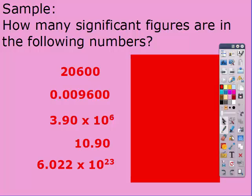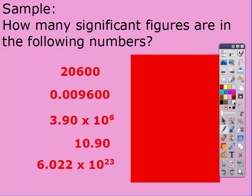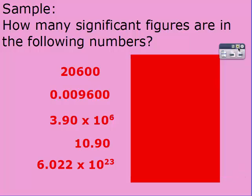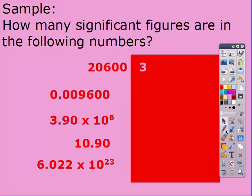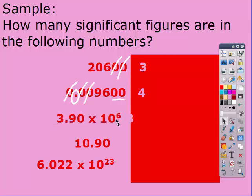Pause the video and try these five on your own; restart when you think you have an answer. For the first one, you should have gotten three — because there's no decimal, the ending zeros do not count. For the second example, you should have gotten four: leading zeros do not count, but ending zeros do if there's a decimal. For the third one, you should have gotten three — ignore the times 10.